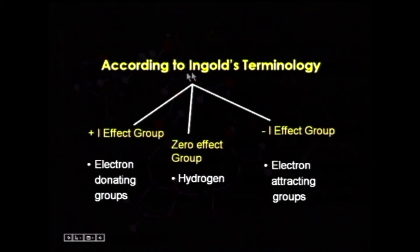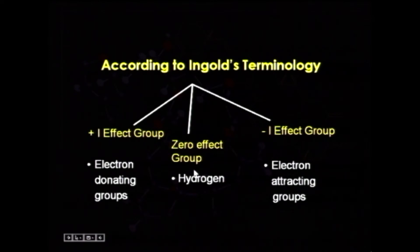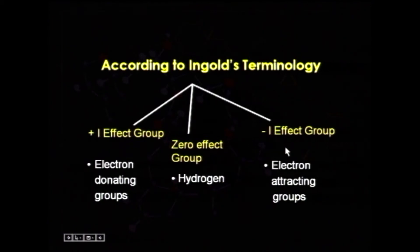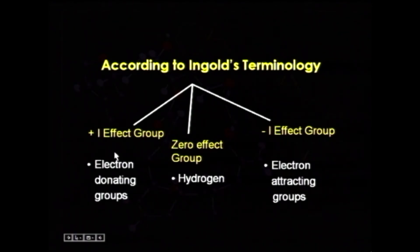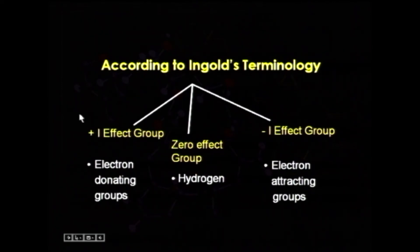According to Ingold's terminology, groups can be divided into three categories. Zero-effect groups, like hydrogen — if bonded to carbon, electrons will not be displaced. Minus-I effect groups are electron-attracting groups; if bonded to a carbon atom, electrons will be displaced away from carbon. Plus-I effect groups are electron-donating groups; electrons are displaced towards the carbon atom.